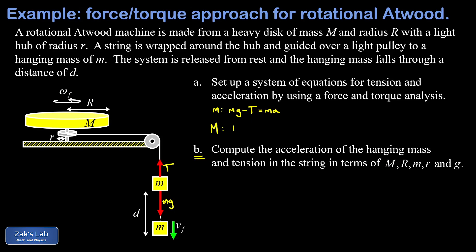Next we analyze the big M disc using the rotational equivalent of Newton's second law: tau equals I alpha, where tau is the torque, I is the moment of inertia, and alpha is the angular acceleration. Looking at an overhead view of the hub, the string comes off causing the hub and disc to spin. The tension T is the same string tension as before, and the string always comes off perpendicular to the lever arm. So the torque exerted by this tension is T times little r.